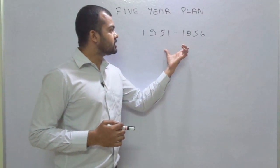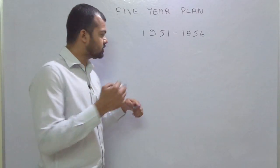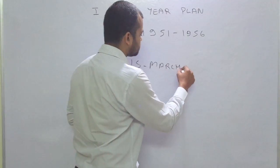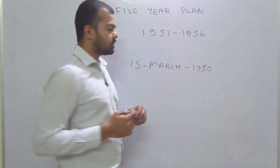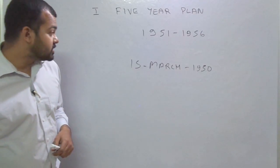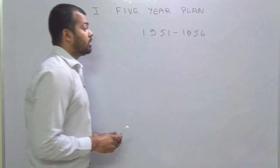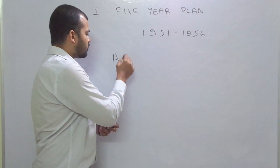This period after independence, planning commission was established on 15th March 1950. This is when our first prime minister established planning commission. We will be talking about the first 5-year plan, the focus was on agriculture.